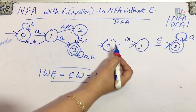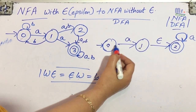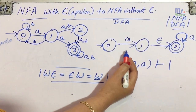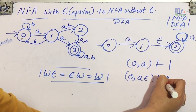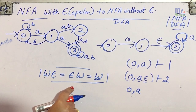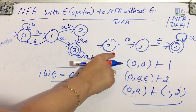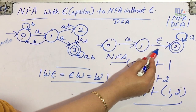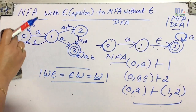Looking at the diagram again — at state 0 with input 'a' the next state is 1, so (0, a) → 1. But also at state 0 with input 'a·epsilon' the next state is 2. Since 'a·epsilon = a' by this property, we can see that (0, a) leads to {1, 2}, defining it as an NFA. So if a transition diagram has epsilon moves in it, it is considered an NFA, not a DFA.